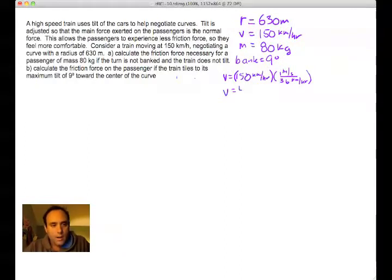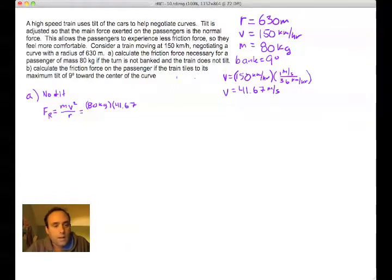So the first thing that we have to do is convert the velocity of 150 kilometers per hour into meters per second, a fairly simple calculation. So you take that 150 kilometers per hour and you multiply it by the conversion factor, considering dimensional analysis of 1 meter per second per 3.6 kilometers per hour. And once you go ahead and do that, you find that the velocity of the train is 41.67 meters per second.